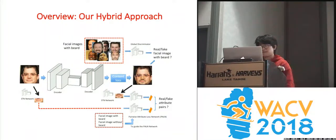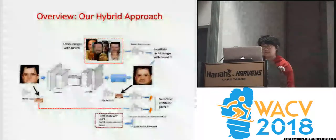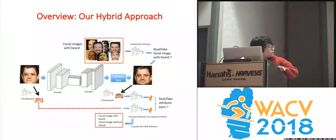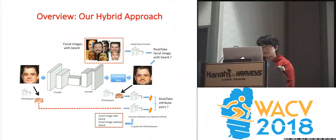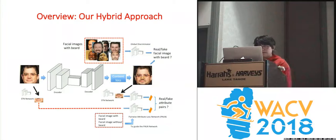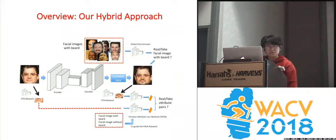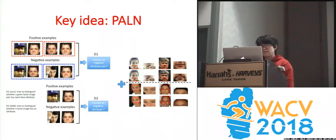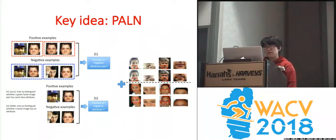Our network consists of two parts. The first part is an encoder-decoder network for new facial image generation. To keep the facial identity and photorealistic quality, we propose to use content loss and adversarial loss. There is also a paired attribute recognition network (PARN) to force the generated facial image to have the desired attribute. The idea of PARN is to distinguish whether a given pair of facial images has the same or different attribute — similar to a Siamese network.